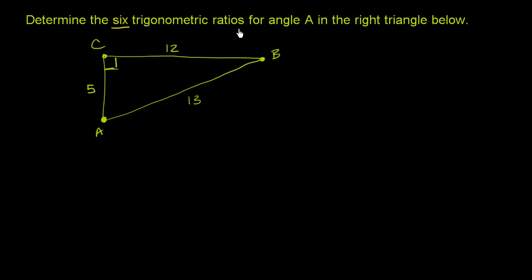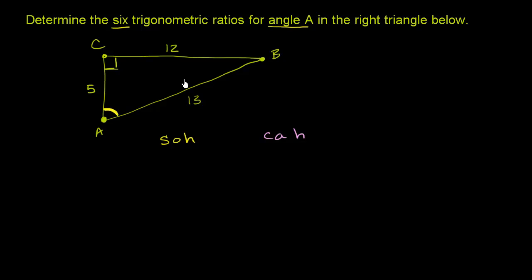Determine the six trigonometric ratios for angle A in the right triangle below. This right over here is angle A — it's at vertex A. To help remember the definitions of the trig ratios, which are human-constructed definitions that have ended up being very, very useful for analyzing a whole series of things in the world, I use the word SOH-CAH-TOA. It's three parts that define at least three of the trig functions.